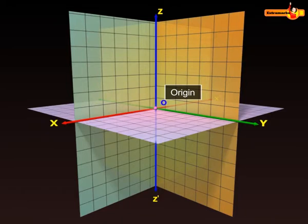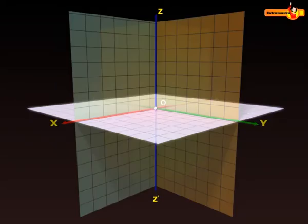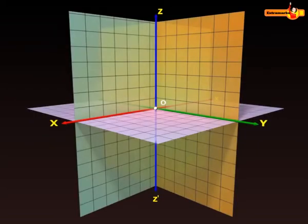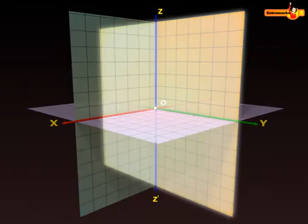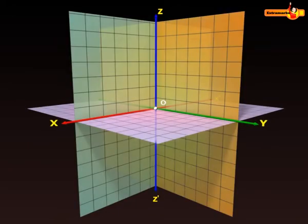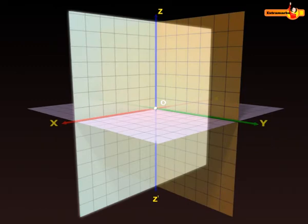Here we also see three coordinate planes. These planes are XOY, known as the XY plane; YOZ, known as the YZ plane; and ZOX, known as the ZX plane.